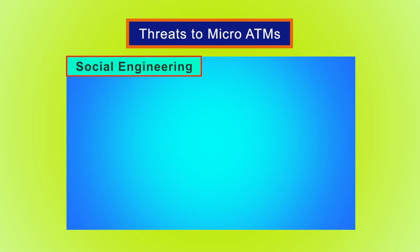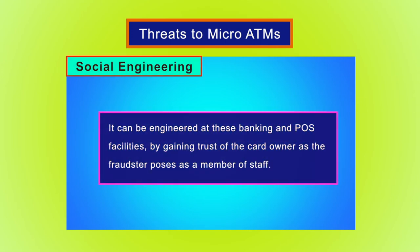Social engineering involves gaining trust, whereby the fraudster poses as a member of staff. The fraudster would then ask the customer to check the card for damages. The fraudster would have gained confidence from the victim using various tactics such as offering assistance to the customer, who perhaps tried to use the ATM without success, or perhaps is a customer not familiar with the use of the MicroATM machine and requires assistance.